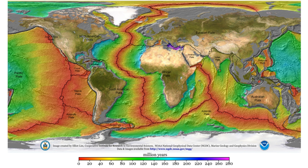Geologists observed geomagnetic reversals recorded in volcanic rocks through magnetostratigraphy correlation, and their signature can be seen as parallel linear magnetic anomaly stripes on the seafloor. These stripes provide quantitative information on seafloor spreading, a part of plate tectonics.